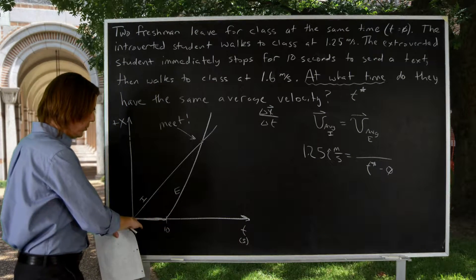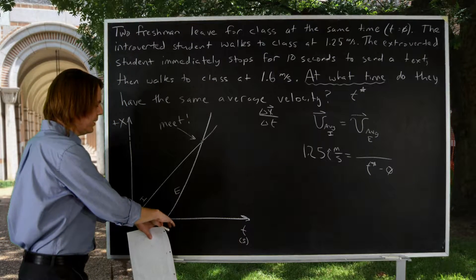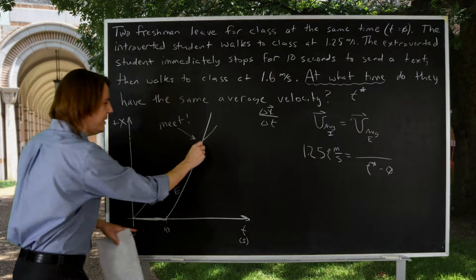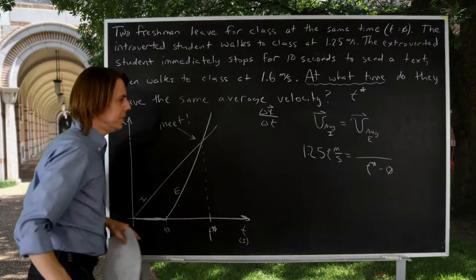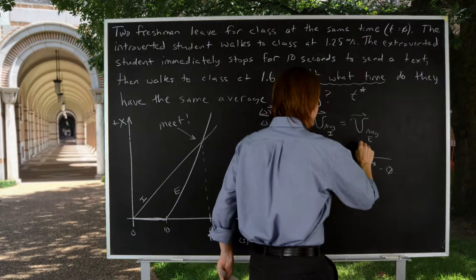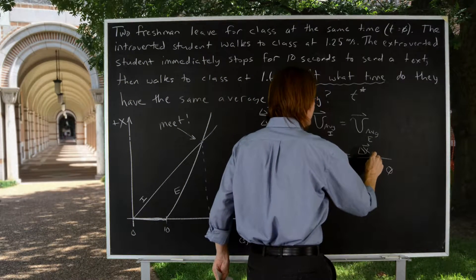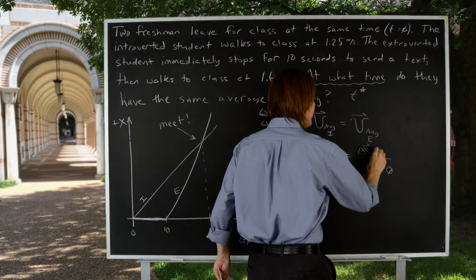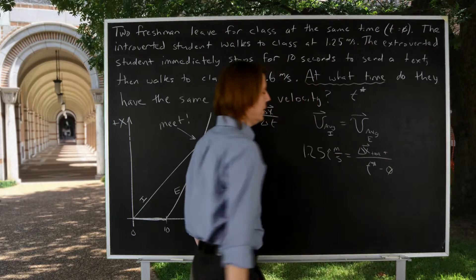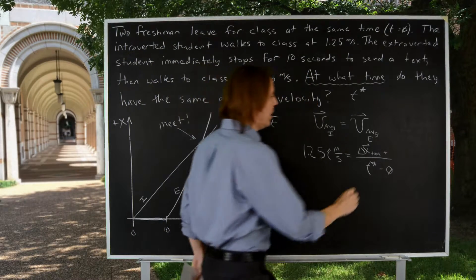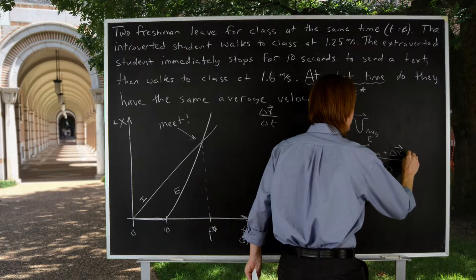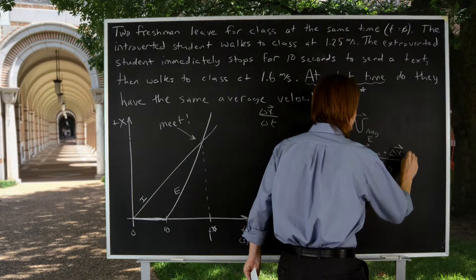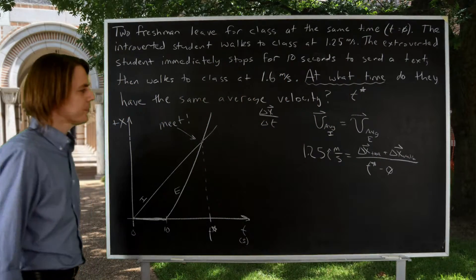All right, well, they had two displacements. There was the period from zero to 10, and then there was the period from 10 to this T star. So let's write those separate. The displacement, and we'll say that's the displacement text, because that's when nothing much was going on, plus the displacement, and we'll say walk. This is when they actually started going to class.